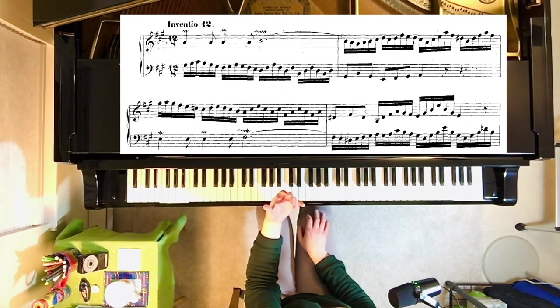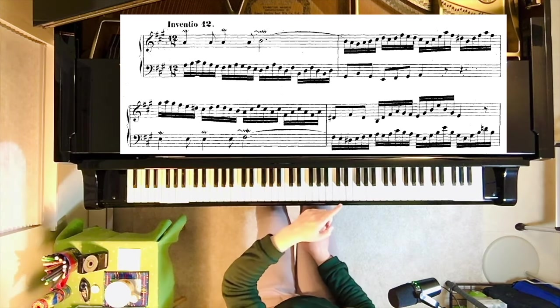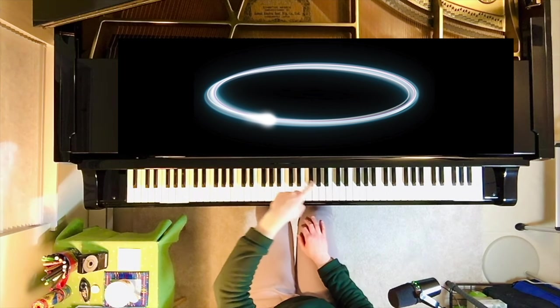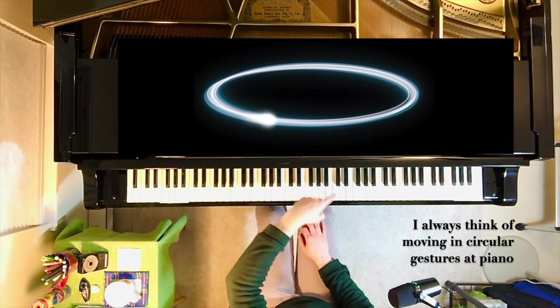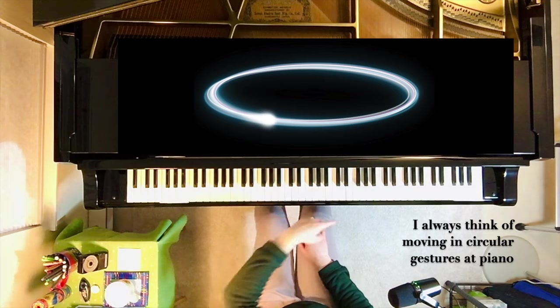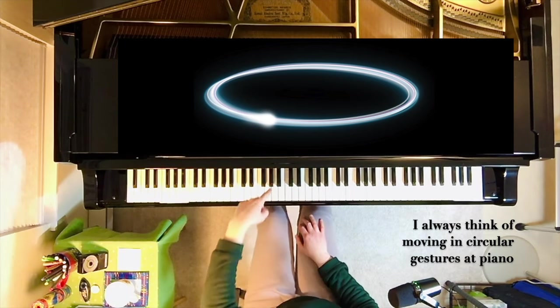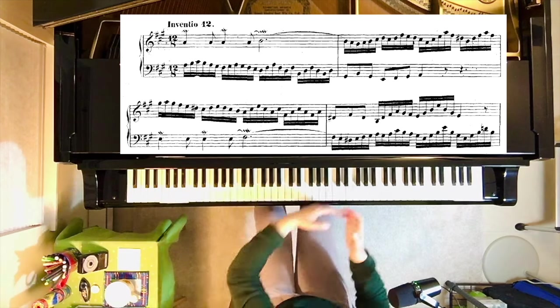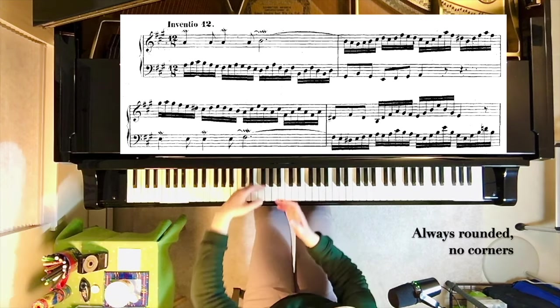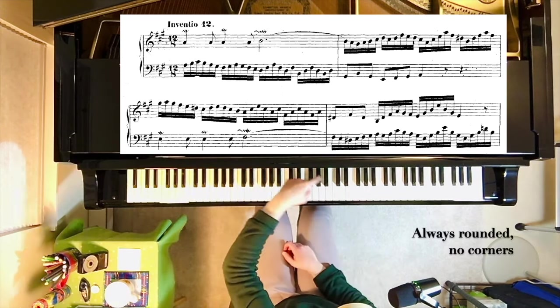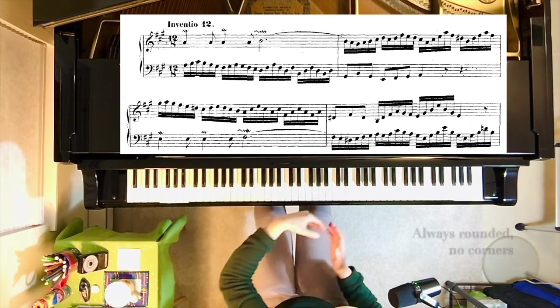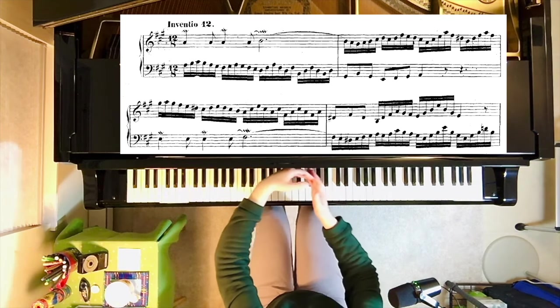So on each of those sextuplets, I'm imagining this kind of gesture. And the bottom part of that circular gesture is the propulsion or the momentum of that roller coaster. And then the top of that circle is the effort to get back up, the struggle.